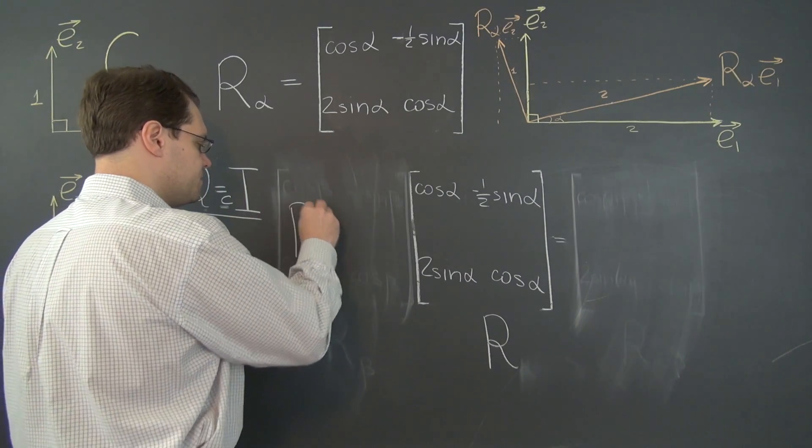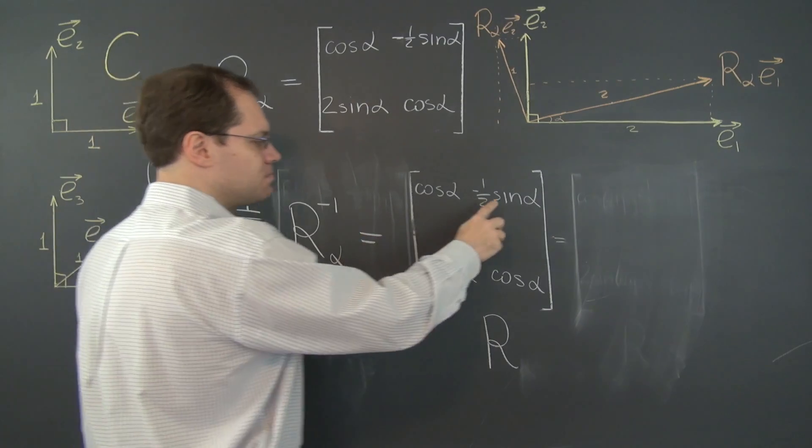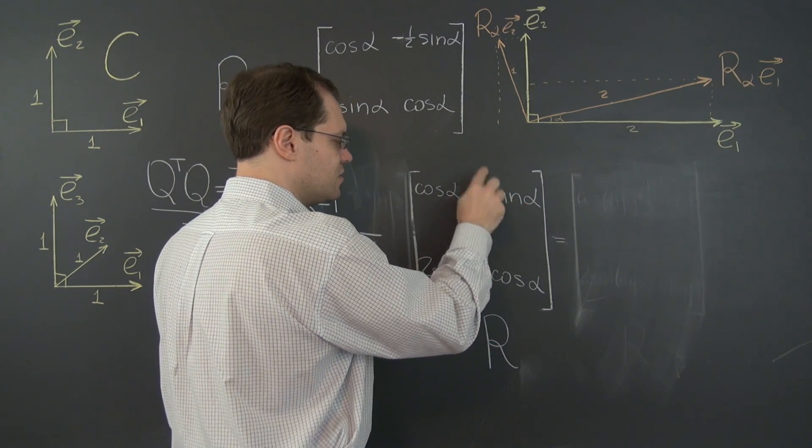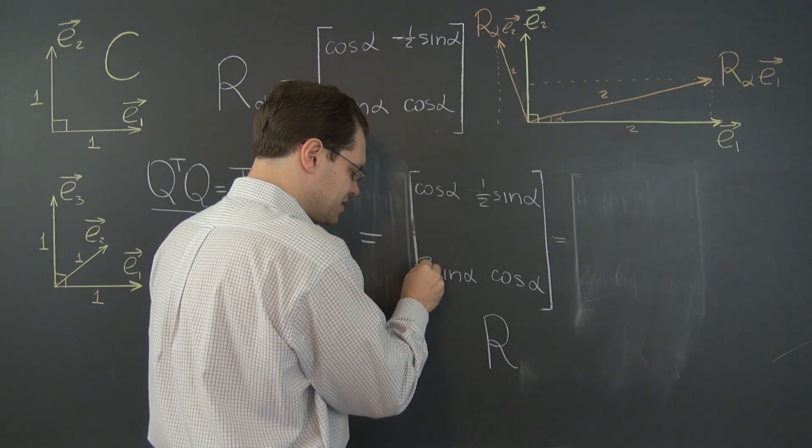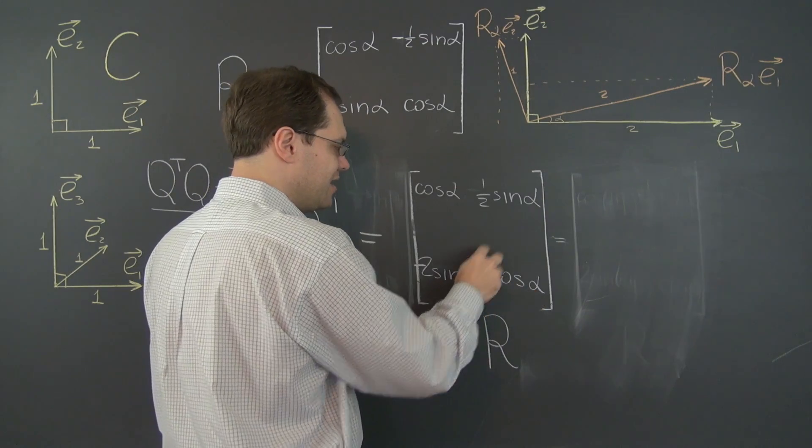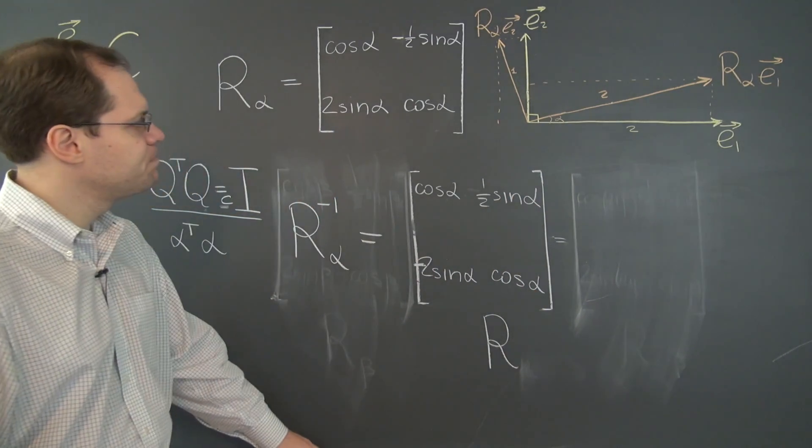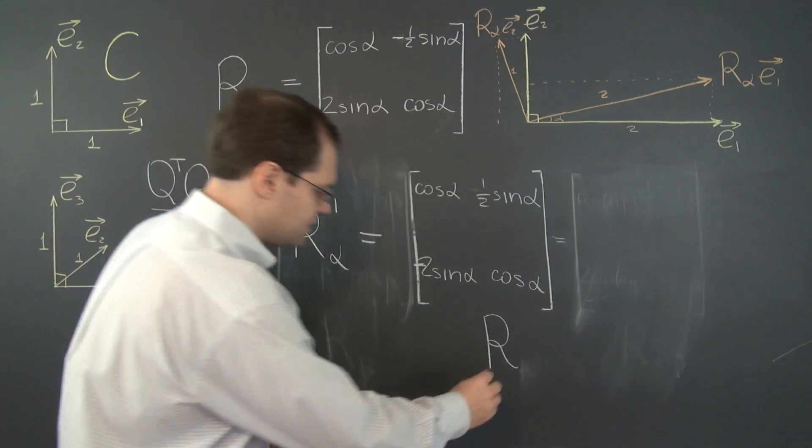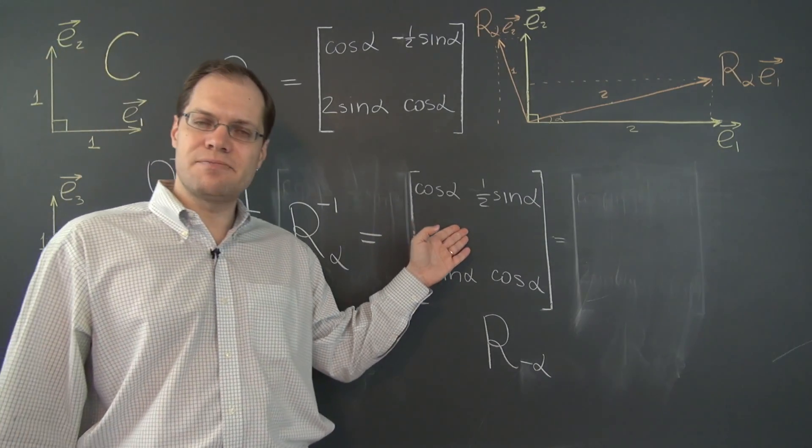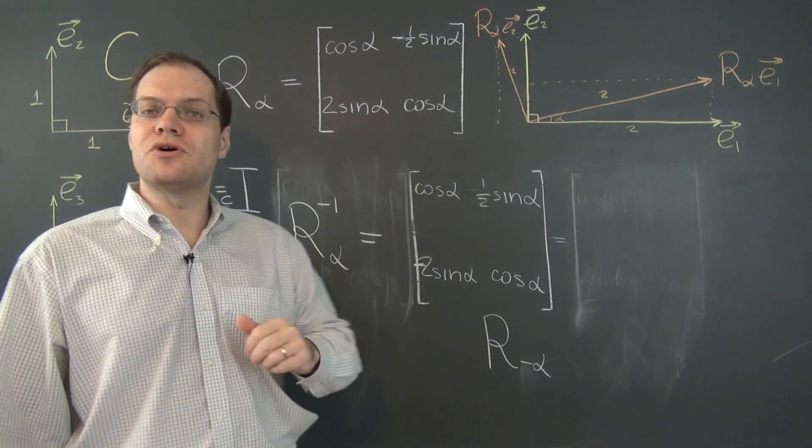So R inverse is obtained by plugging in the minus alpha in place of alpha. So the net result will be that this minus will jump from here to here because the cosine function doesn't care and the sine function flips its sign. So we'll have a minus sign here. And so this is R of minus alpha. And the question is, is this matrix the transpose of this one? And of course, it's not.